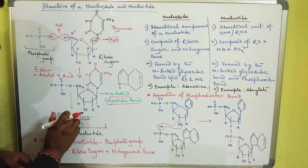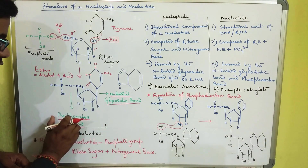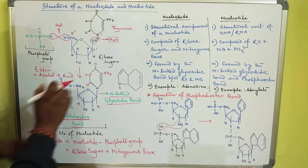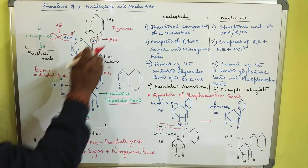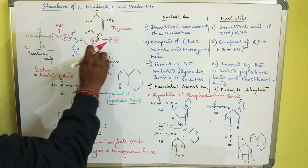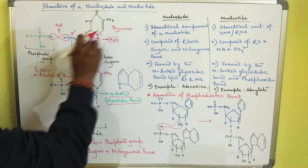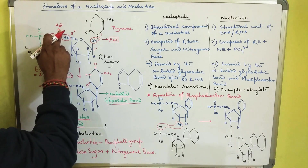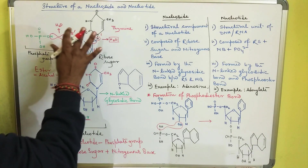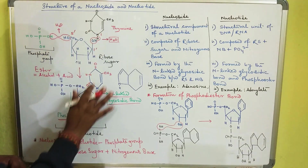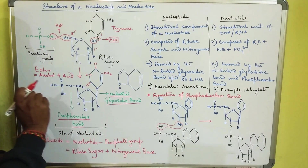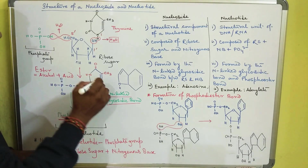So there are two bonds involved in the formation of a nucleotide: one is the N-linked glycosidic bond, and the other is the phosphoester bond. One more important piece of information you should know relates to purines and pyrimidines.